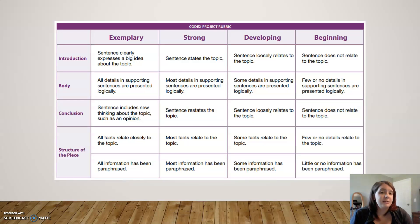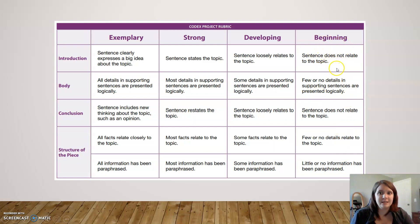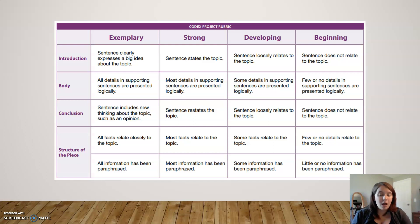I mentioned that I would show this again — this is the rubric we're going to use to look at your writing. When you're drafting, keep these elements in mind because we want to make sure you're aiming for the strong end, not the weak end. We want your topic sentence to relate to the big idea, plenty of supporting details, everything to relate, and we also want to make sure you are not copying directly from the story. That is a form of plagiarism and we do not want that — it's really important that we paraphrase.